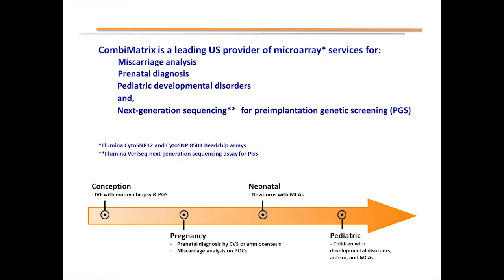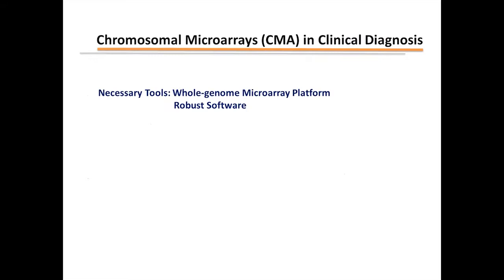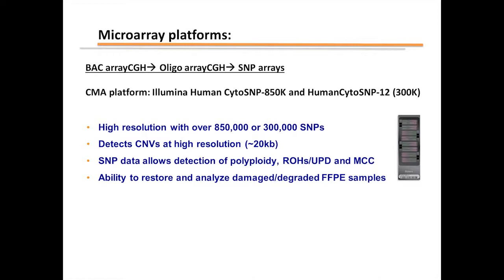You mentioned you've used other arrays before the Illumina array — what software were you using? That's a good question. I think we have used BioDiscovery's software for quite a few years. The oligo arrays we were using were from Agilent, though I am more recent to CombiMatrix — only the last three years — so I will have to get back on that. I'm presuming it was either in-house or the software provided by Agilent for the oligo array CGH.